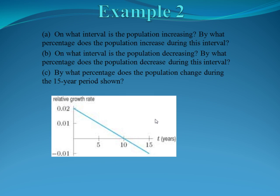Now let's go on to a harder example. Suppose we have a graph which represents the relative growth rate over 15 years. Part A: On what interval is the population increasing, and by what percentage does it increase during this interval? Part B: On what interval is the population decreasing, and by what percentage? And Part C: By what percentage does the population change during the entire 15-year period? This graph shows p prime of t over p of t over 15 years.